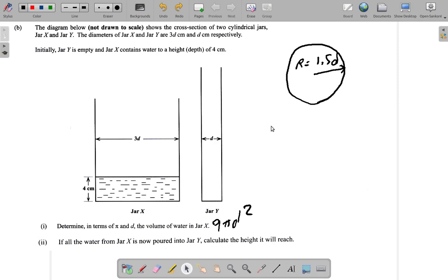Now the volume of water that is in jar x, the volume of water in jar x, V, is equal to 9πd². Now we're dealing with jar y.